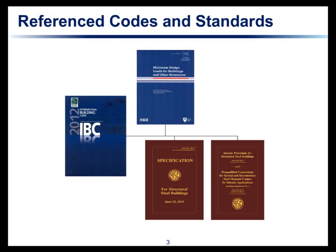As a general introduction to set the frame of reference for how these documents interact — and I'm sure this is nothing new to anybody — in most cases we'll assume you're starting with the International Building Code, in this case the 2012 IBC. That references ASCE 7, and it also references the two AISC documents. The ASCE 7 document as well references those AISC documents in the same way.